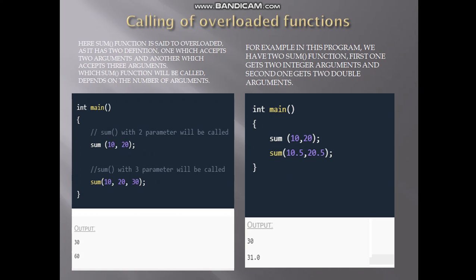When you overload a function, you call it by passing the values for the parameters. Here you can see the first call to 'sum' with values 10 and 20, and the second call to 'sum' with three arguments: 10, 20, and 30. The first call invokes the two-parameter function and the second invokes the three-parameter function. In the other example, both calls pass two parameters, but the first passes integer values and the second passes float values, so it performs integer addition and float addition respectively.